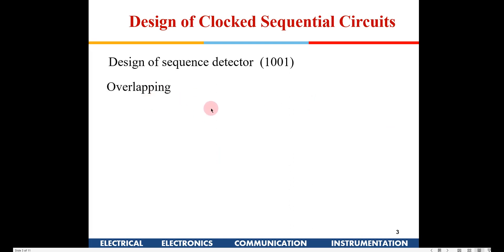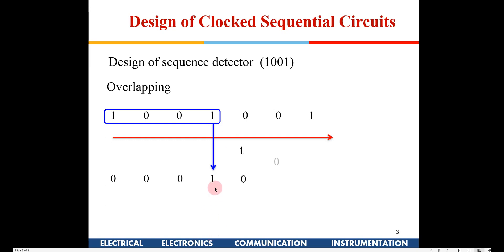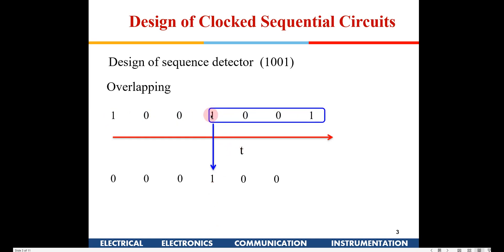There are two kinds of sequence detectors: one is known as overlapping. Suppose this is the sequence coming — 1, 0, 0, 1 — I get output 1, the lock gets opened. Again I have 0, 0, 1 coming. This one will also be taken as input, meaning 1, 0, 0, 1 is there again — that is overlapping. This one is from the previous state as well as the next state. When I receive that 1 I will get output 1. This is known as an overlapping sequence.